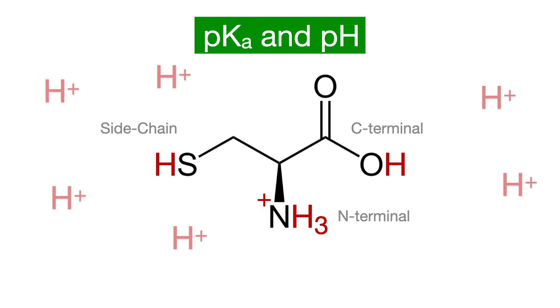The question stem gave the pKa values for each proton-containing group on the amino acid. The C-terminus has a pKa of 1.96, the N-terminus has a pKa of 10.7, and the thiol on the side chain has a pKa of 8.33. The pKa is simply the pH at which an acid, or proton-containing group, is deprotonated.